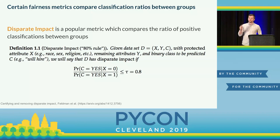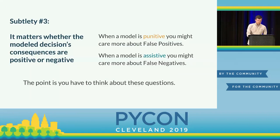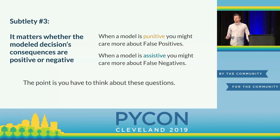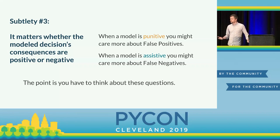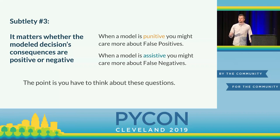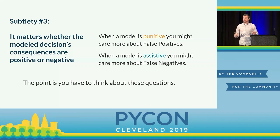Subtlety number three is that the consequences of your model matter. If your model is punitive — handing out something like more jail time — you might care more about false positives, the cases where your model assigns someone a punishment they don't deserve. On the flip side, if your model is assistive — handing out a benefit to people who need it — you might care more about false negatives, where the model says a person doesn't need this benefit but they really do.